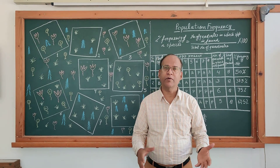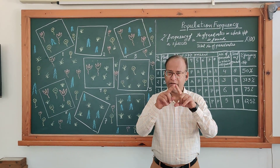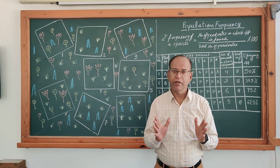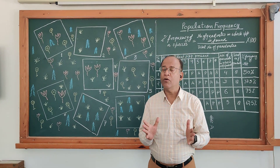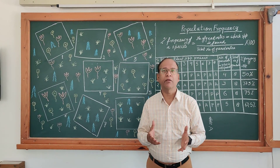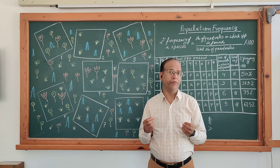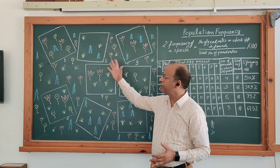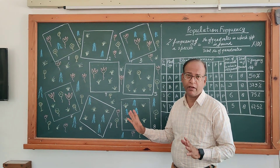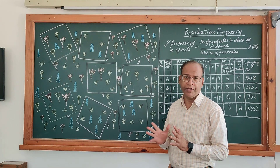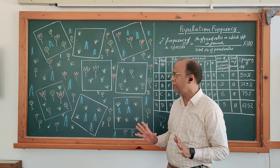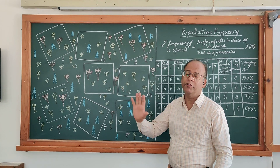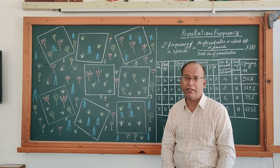What are quadrants? Quadrants are square-shaped units, maybe of metal, maybe of wood. This is a hypothetical community, and in this community four species are present.